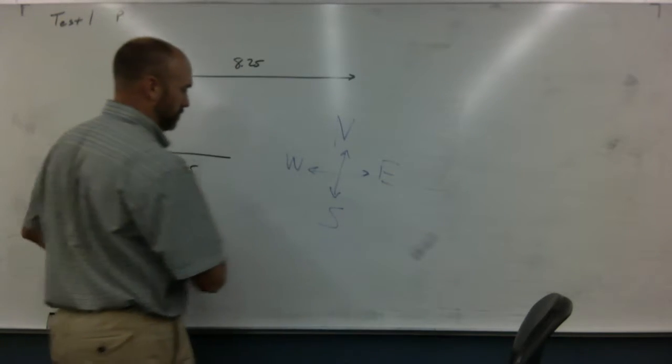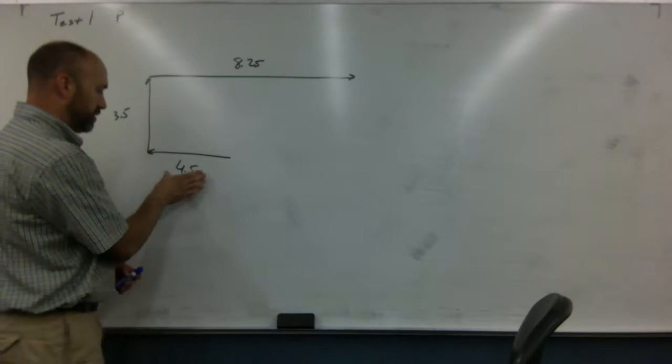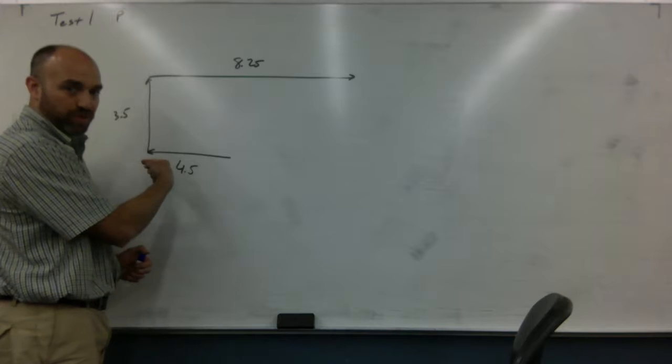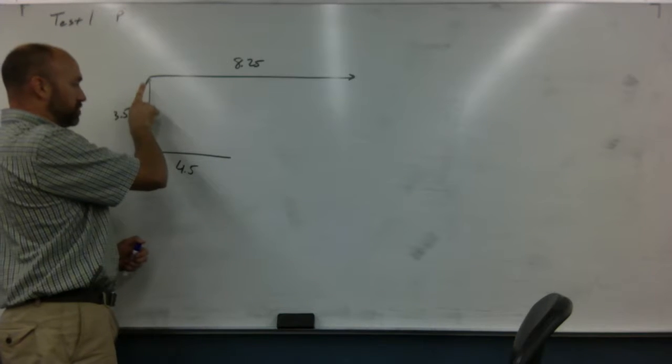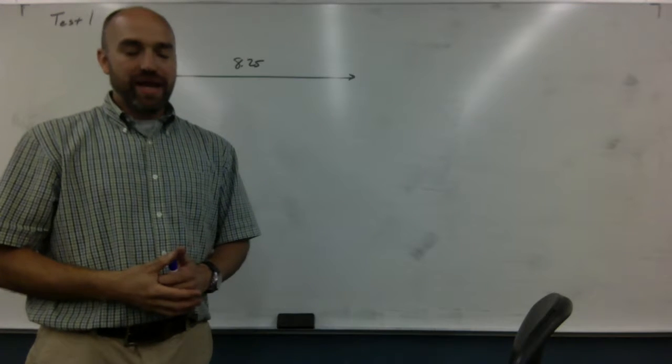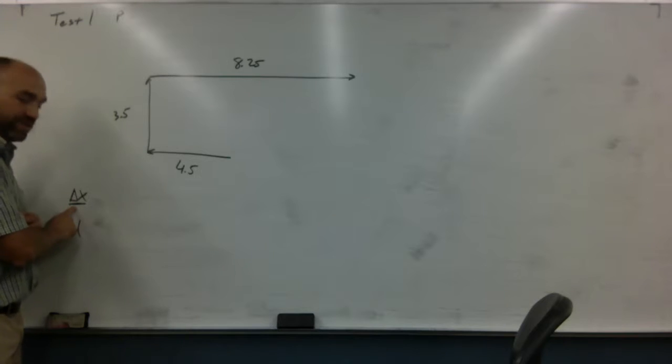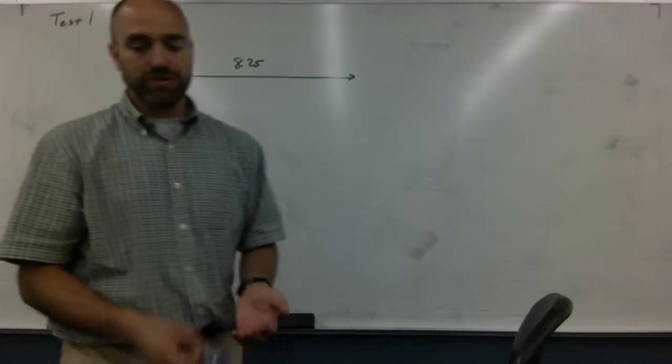This girl starts here, travels four and a half blocks west, three and a half blocks north, and then eight and a quarter blocks east. It asks three questions: the first question is the displacement amount and direction, and then the distance traveled. This is a great question to drive home the point of a vector and displacement versus distance, which is just the amount.